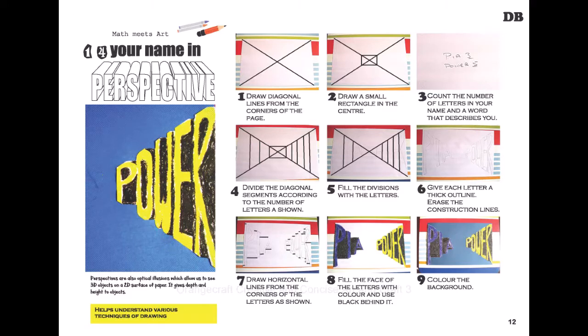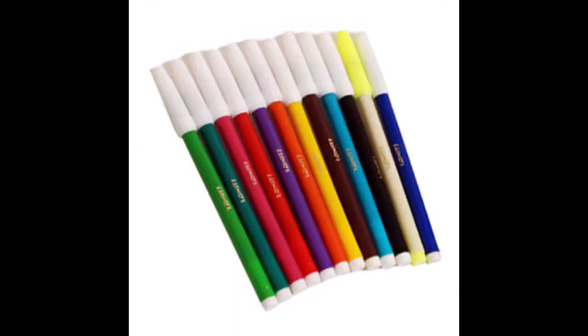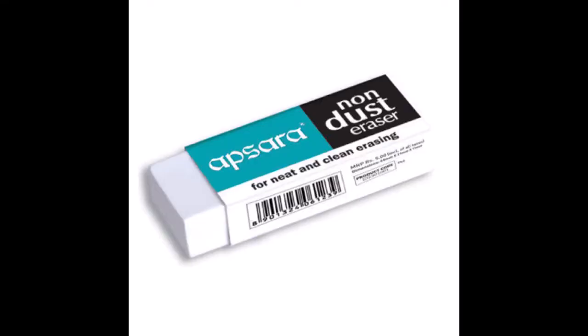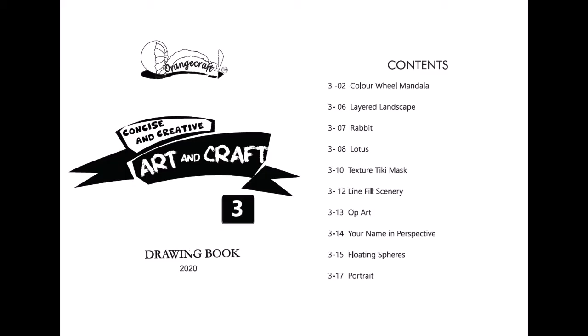Activity 14: Your Name in Perspective. You will need from home: ruler, pencil, sketch pens, colored pencils, and an eraser. And from the kit, the drawing book.